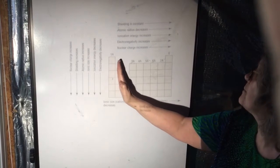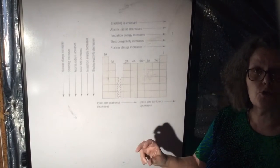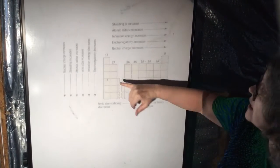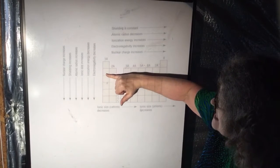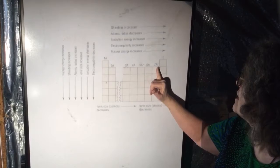Now what about the ionic size? It is increasing going down, so the opposite will be true as we go left to right. Electronegativity is another one — electronegativity is how well does an element grab or attract electrons. The electronegativity is decreasing as we go down the columns and family, and increasing left to right.